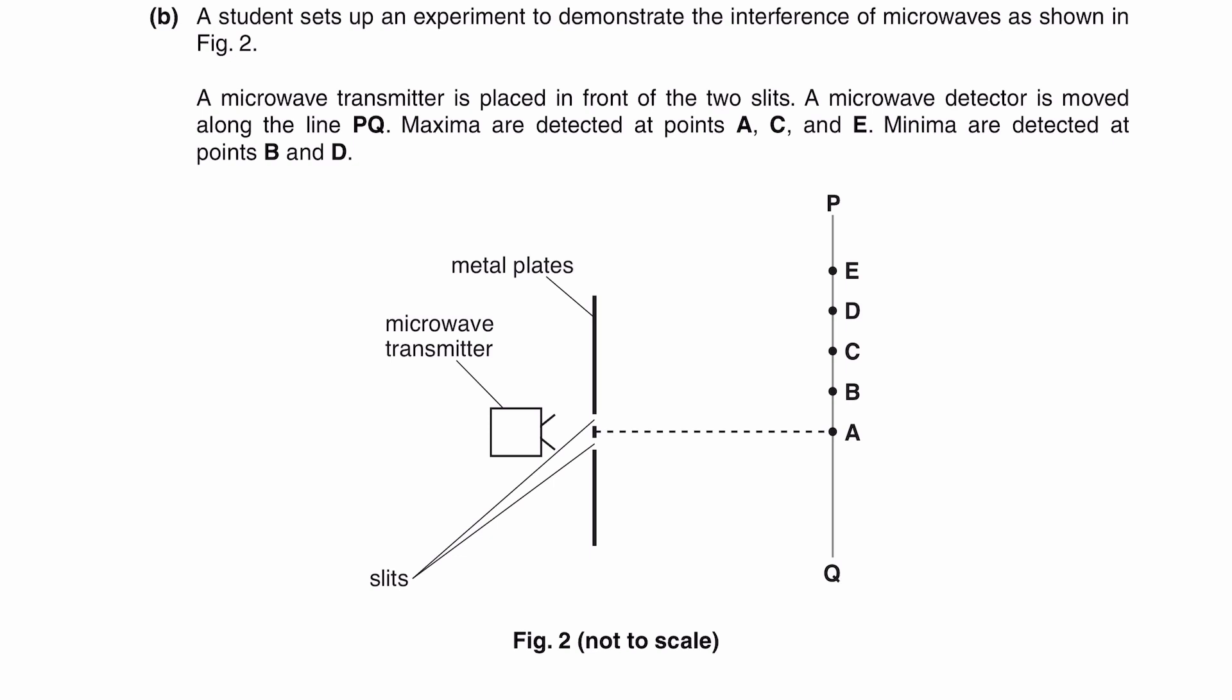A student sets up an experiment to demonstrate the interference of microwaves as shown in Figure 2. A microwave transmitter is placed in front of the two slits, so over here, and then a detector is moved along the line PQ. Maxima are detected at points A, C, and E. So maxima are these points.